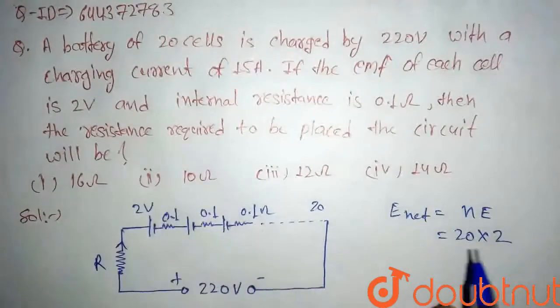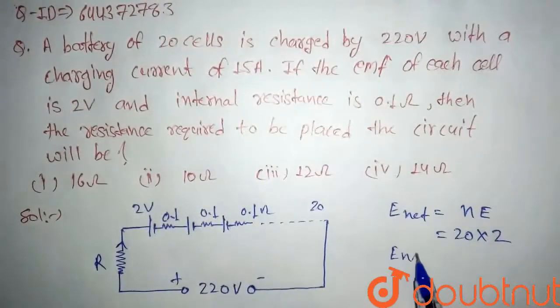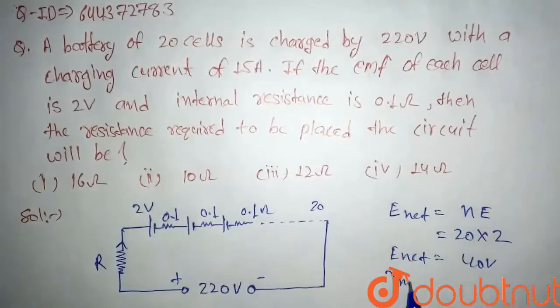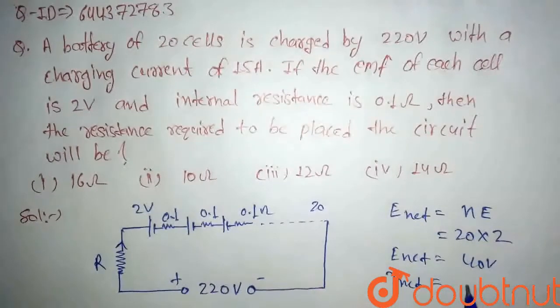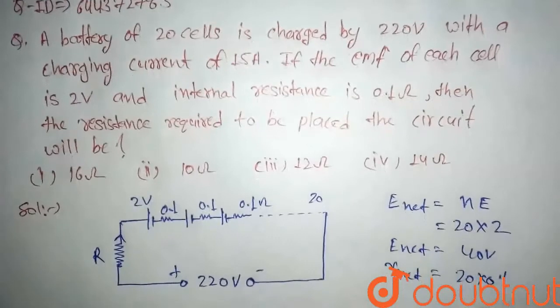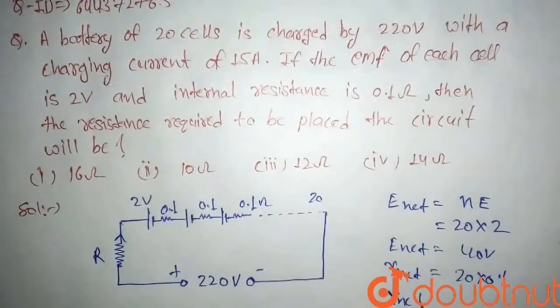And what will be the net internal resistance? The equivalent internal resistance will be 20 times 0.1 ohm, so our net resistance comes out to 2 ohms.